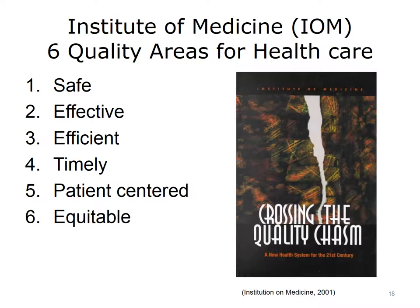Crossing the Quality Chasm provided six aims and simple rules for redesign of healthcare. They are: care should be safe — as safe for patients in their healthcare facilities as in their homes; the science and evidence behind healthcare should be applied and serve as the standard in delivery of care; care and service should be cost effective and waste removed from the system; patients should experience no waits or delays in receiving service; the system of care should revolve around the patient, respecting patient preferences; and unequal treatment should be a fact of the past — disparities in care should be eradicated. Importantly, increasing the quality of care is our goal; implementing technology is a way to achieve this goal.